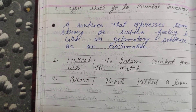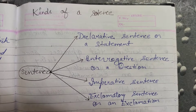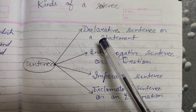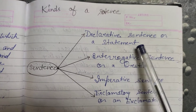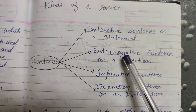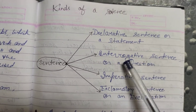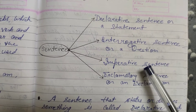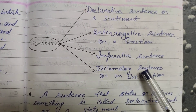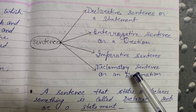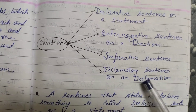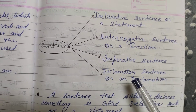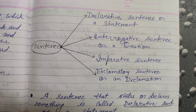So now this is clear to you. Aaj maine aapko kinds of sentence padhaya hai — declarative sentence (statement, full stop at end), interrogative sentence (question, using question words), imperative sentence (command, advice, request), and exclamatory sentence (sudden or strong feeling). I expect you will like my lecture — please subscribe and share it. Thank you very much.